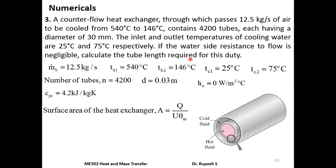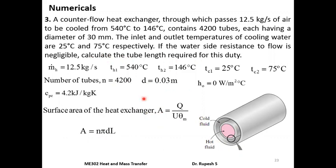Surface area A = q / (U × θm). The surface area is provided by the curved surface of the inner tubes. For a single tube, curved surface area = π × d × L. With n = 4200 tubes, total surface area = n × π × d × L. So once we find A, we can calculate length L = A / (n × π × d). We need to evaluate U and θm first.